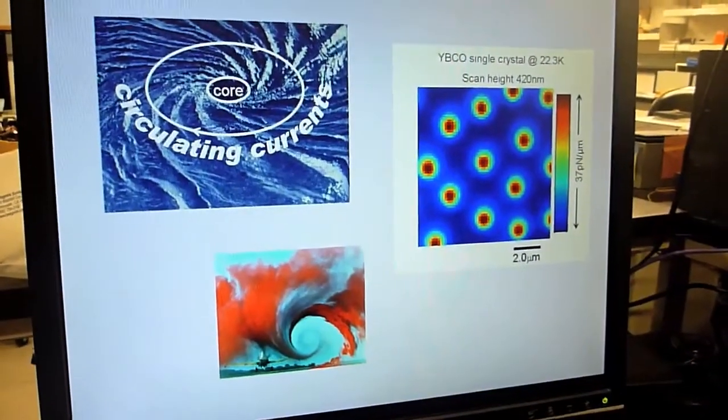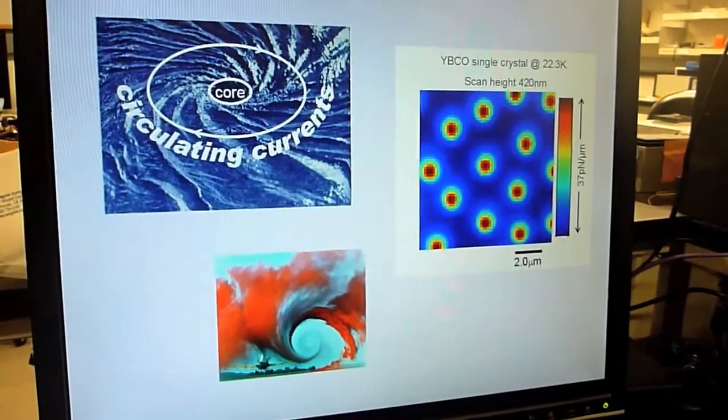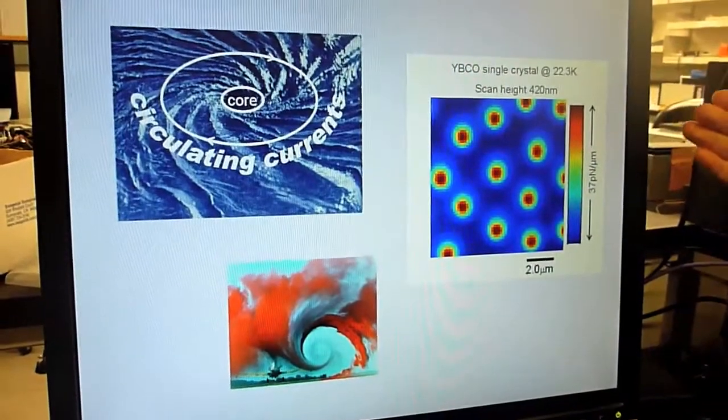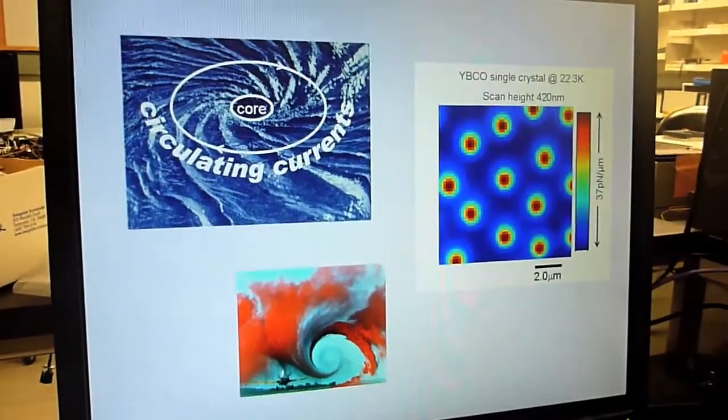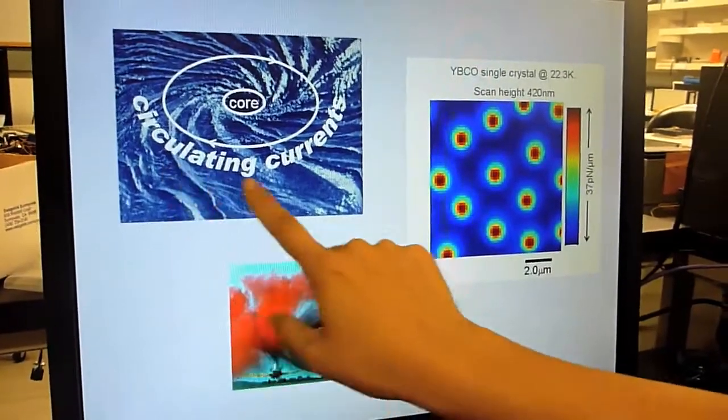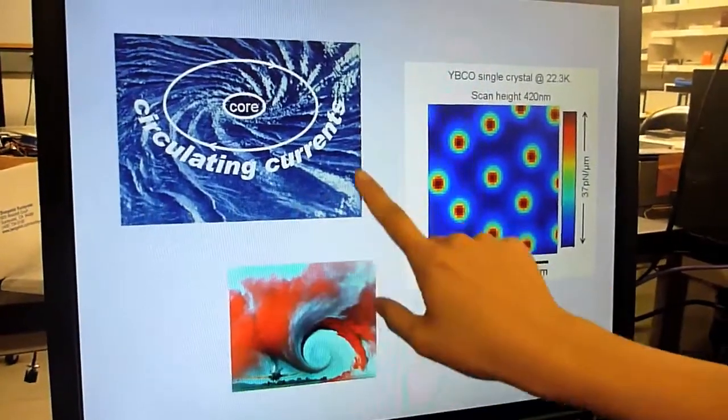This is about one hundredth of the thickness of your hair. This vortex has the similar structure as a large vortex. For example, circulating current in the ocean as drawn here.